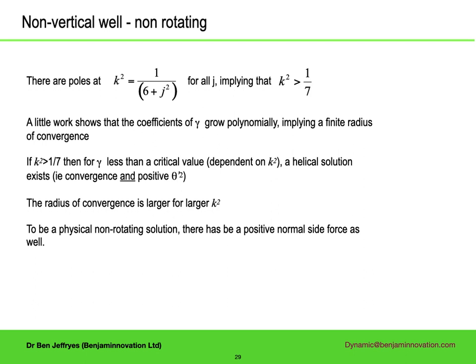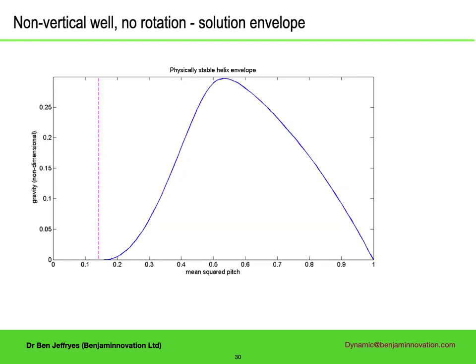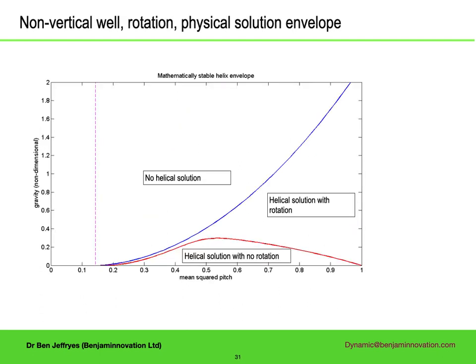Calculating the range of gamma for which there is a physical solution, that is one with positive normal side force, gives this envelope. The dashed magenta line is at 1 seventh. On the x-axis is k squared, which is the mean of the pitch squared. On the y-axis, gamma, a non-dimensionalized gravitational force. In reality, gravity doesn't vary, but the non-dimensionalization involves the compression, and as the compression increases, gamma decreases. Just as in the vertical case, there are solutions up to k squared equals 1. If we remove the normal side force constraint, which is equivalent to saying that for some rotation speed there is a solution, the solution envelope does not expand very much for lower k, but rather than declining after about k squared equals 1 half, it continues to expand.